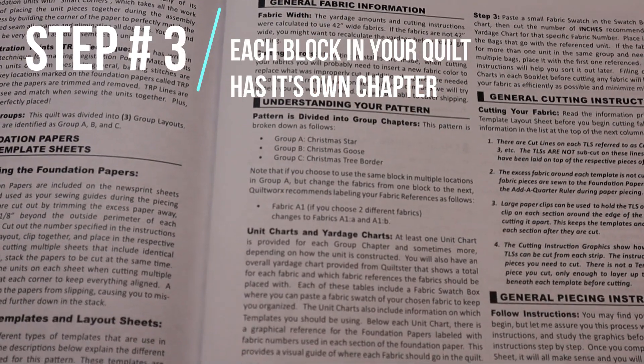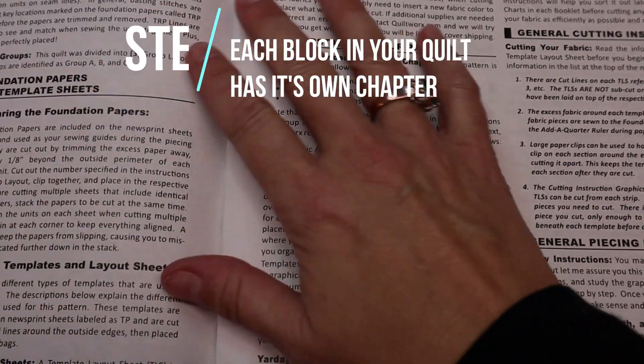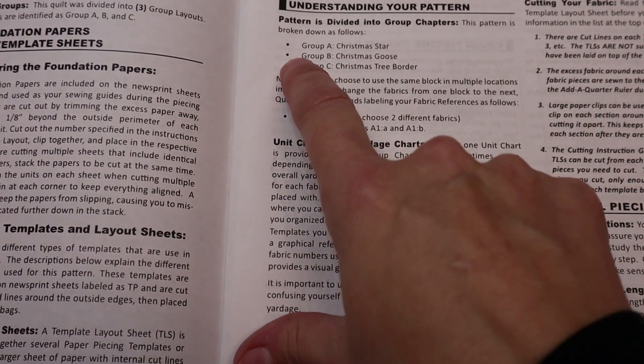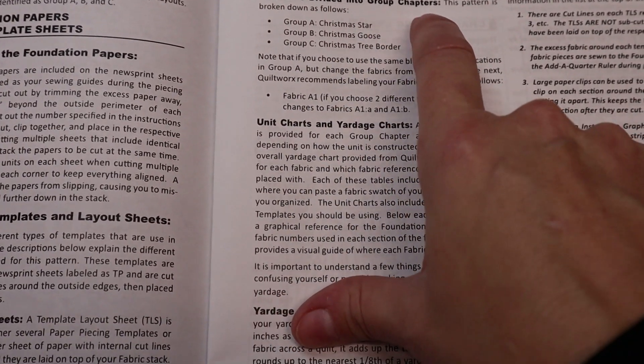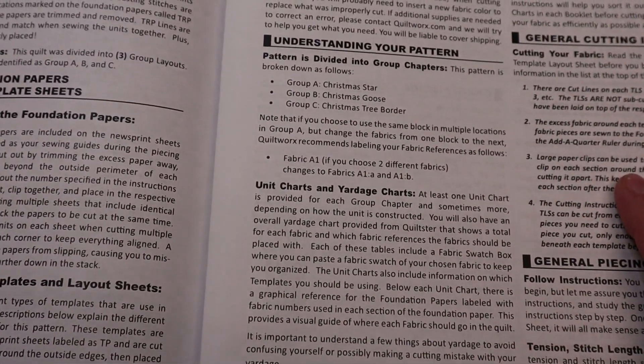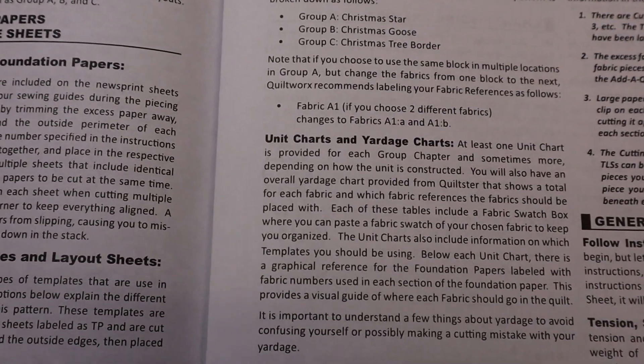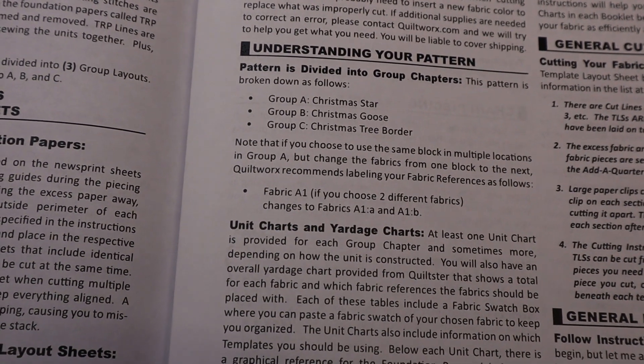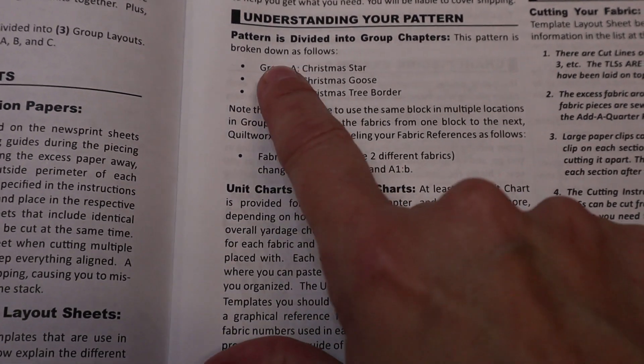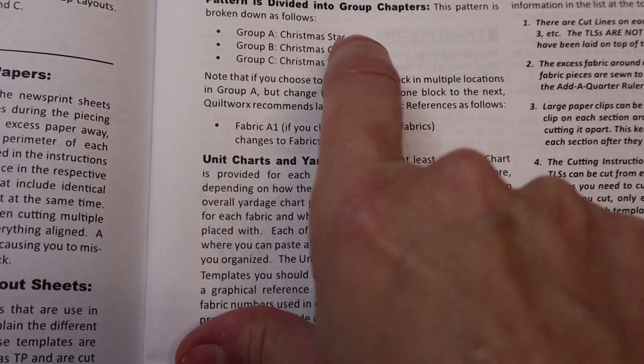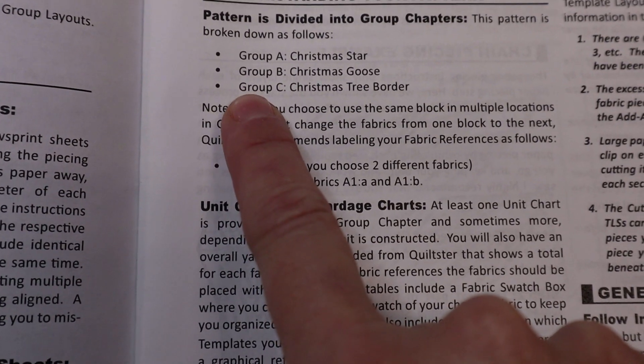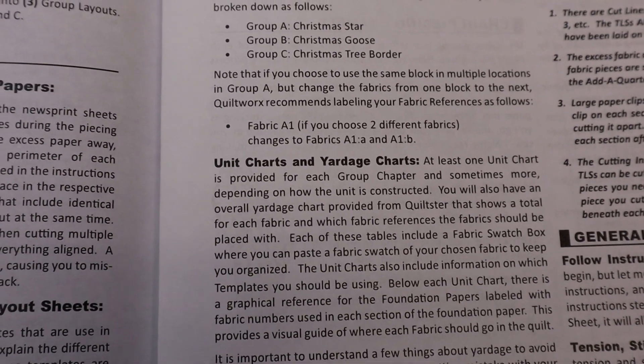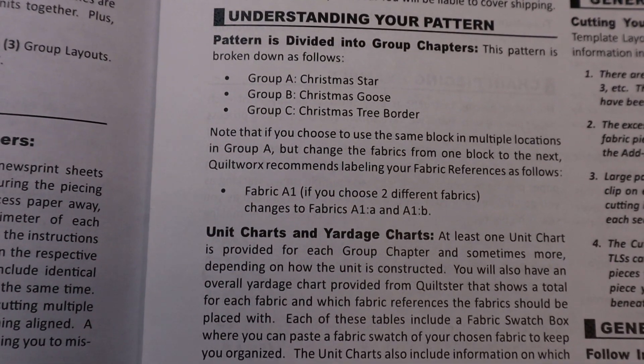Okay, now we're on to tip number three. As you get towards the end of your general instructions, it's going to say understanding your pattern. And right here in this specific pattern, it tells you that it's divided into group chapters. Most of Judy's patterns are, if it's a mixer pattern, you're going to have different mixer chapters. If it's a technique of the month, you're going to have different chapters for each unit that you're going to sew. So with this pattern, I'm going to look for a chapter for group A, which is the Christmas star. There'll be a group B chapter and a group C chapter. So each section in your quilt will have its own chapter.